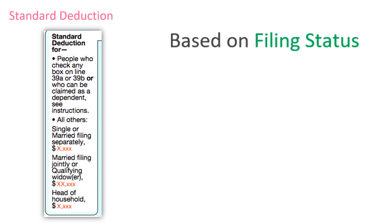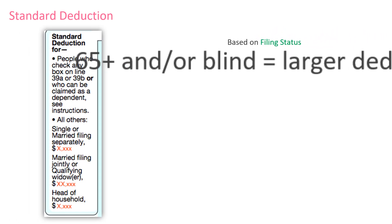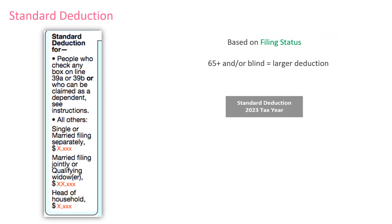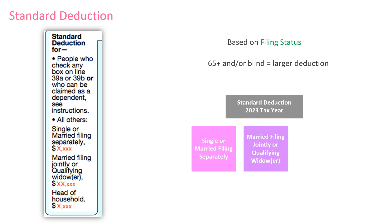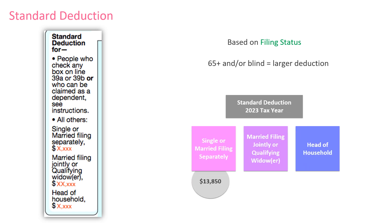The standard deduction amounts are listed on page 1 of the 1040. These amounts are generally adjusted every year. These are the standard deduction amounts for the current tax year.